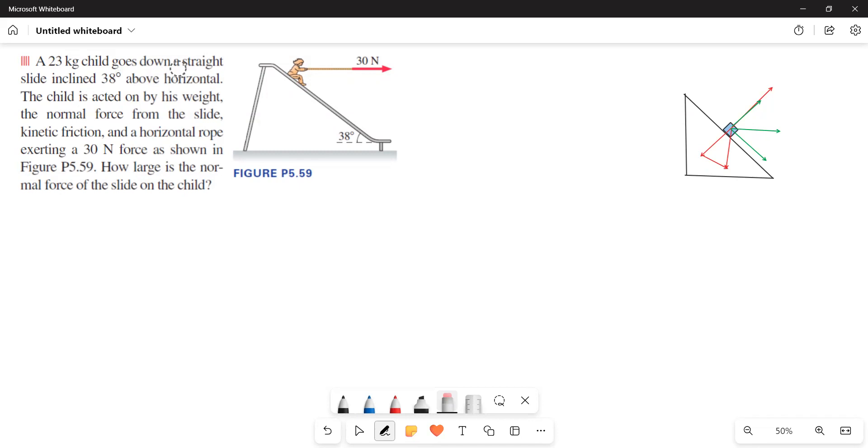A 23 kg child goes down a straight slide inclined 38 degrees above horizontal. The child is acted on by his weight, the normal force from the slide, kinetic friction, and a horizontal rope exerting a 30 N force as shown in figure. How large is the normal force of the slide on the child?